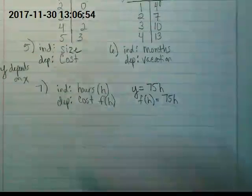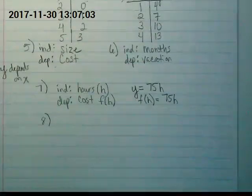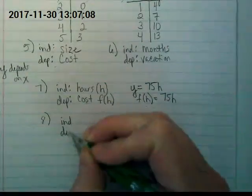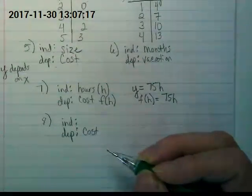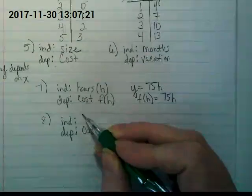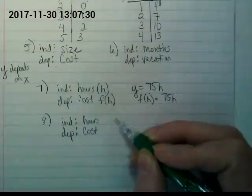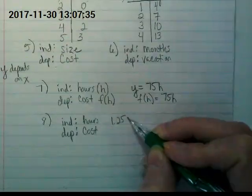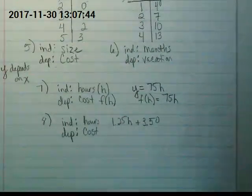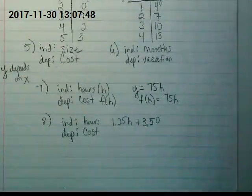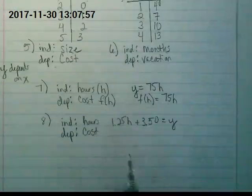Let's try number 8. An ice rink charges $3.50 for skates and $1.25 per hour. Independent, dependent. The total cost depends on two things this time, doesn't it? The independent variable is going to be the hours spent. But the equation is going to be $1.25 times the hours, plus the fee. Unless you're one of those fancy people like my cousin who has her own skates.